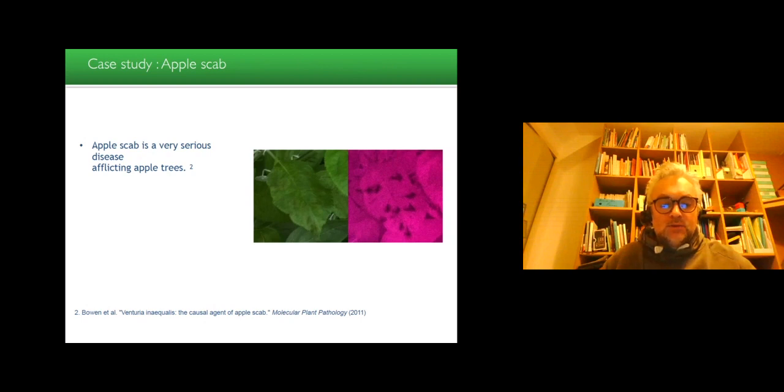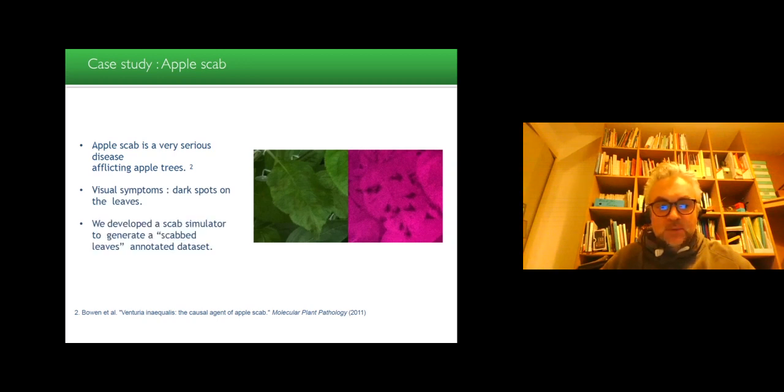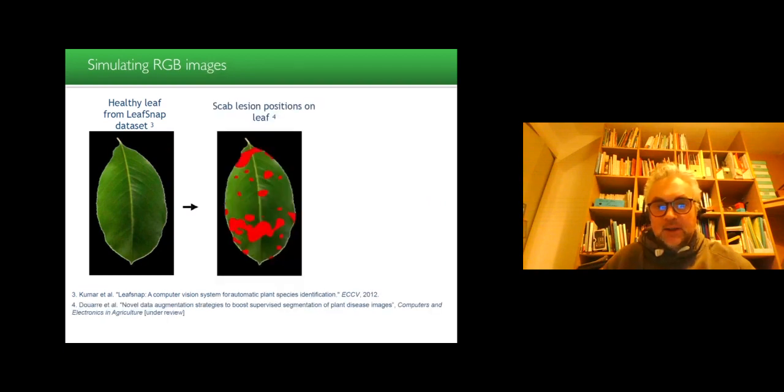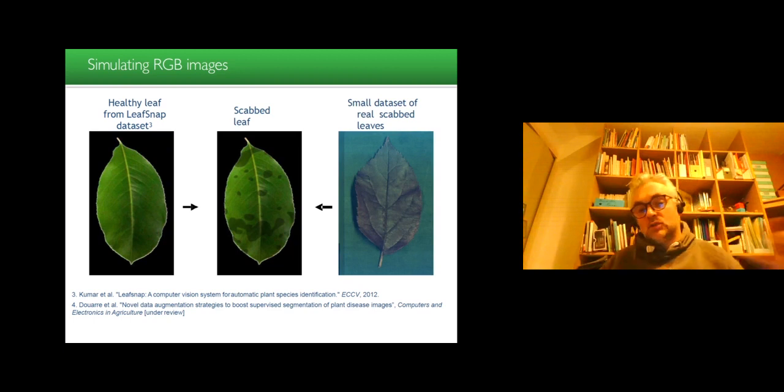So we use as a case study the apple scab. The visual symptoms are the dark spot. And what we did is we developed a scab simulator to generate a scab leaf annotated image. So we take healthy leaf, we simulate lesion on the leaf, and then we adjust the contrast based on small real data set of real scab leaf.